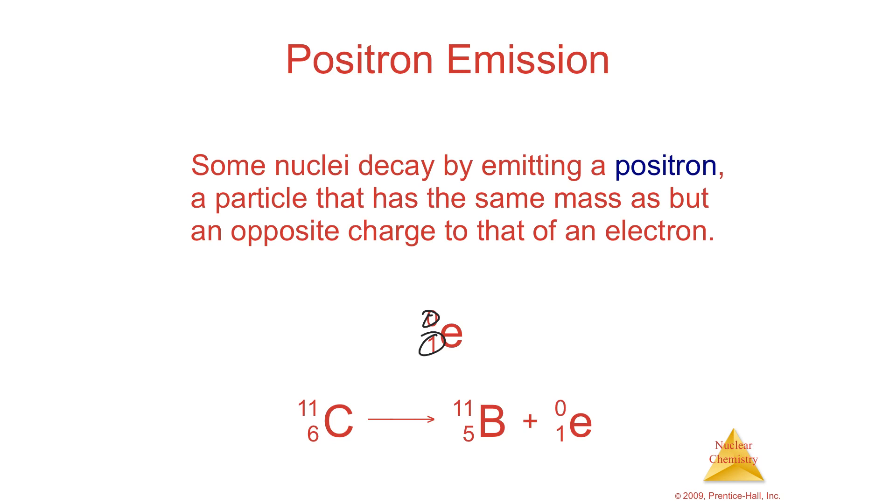So if you have something like carbon-11 that sends out a positron beam, the only way to do this is to make sure that everything adds up. So you've got zero here, so it's not going to affect this number, so your mass number stays 11. But in order to have a 1 here, and it equals 6 on the other side, carbon has to be turned into boron.